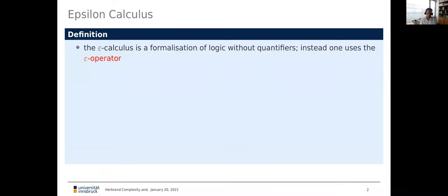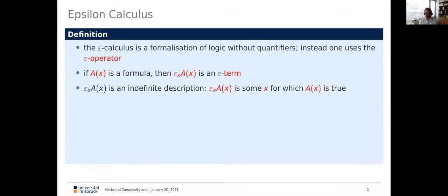What is the epsilon calculus? The epsilon calculus is the formalization of logic without quantifiers. Instead, we use the epsilon operator — a term-forming operator which transforms a formula A of x into a term, the so-called epsilon term, epsilon x A(x). It's an indefinite description: semantically, this term stands for some x for which the formula A of x is true. With this term-forming operator, we can get rid of quantifiers — in particular existential quantifiers, but we can also define universal quantifiers. So we transform all quantifier complexity onto the complexity of the term level.